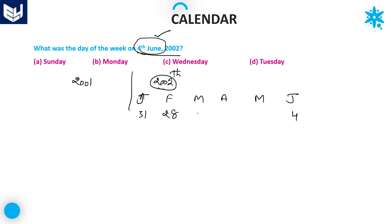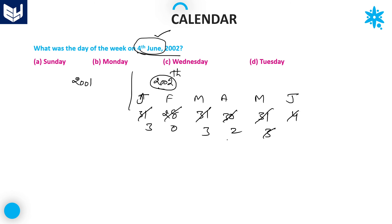March, April, May: 31, 30, 31. Canceling with 7: January 31 gives remainder 3; February 28 gives 0; then 31 gives 3; 30 gives 2. Canceling 4 + 3 = 7 (cancel). Total remaining is 8 days. 8 divided by 7 gives remainder 1. So the right-hand side value is 1.